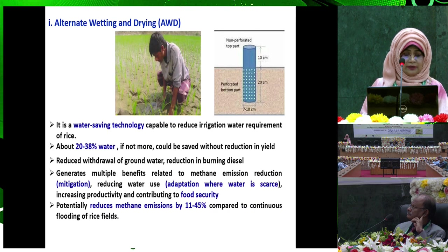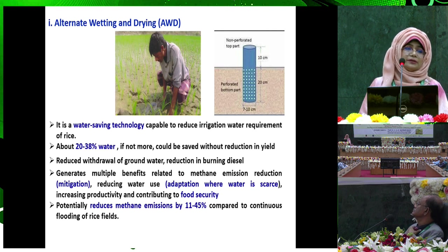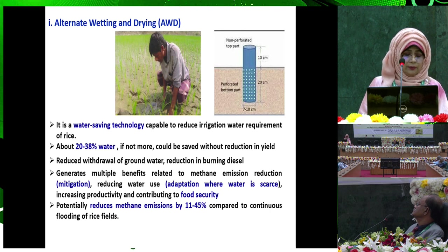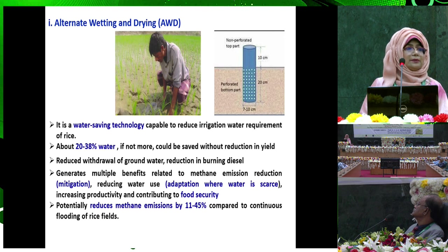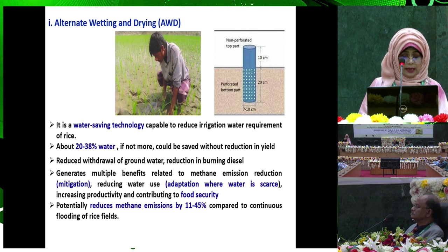Alternate wetting and drying: in Bangladesh we depend on rice, which requires six to seven times more water than upland crops. About 300 to 3,000 liters of irrigation water is needed for one kg of rice production. Among water-saving techniques, alternate wetting and drying is more popular. It can save about 20 to 38 percent water without reduction in yield, generating multiple benefits related to methane emission reduction, reducing water use, and increasing productivity contributing to food security.